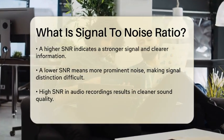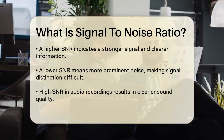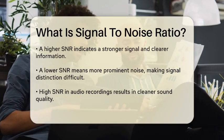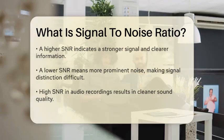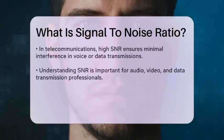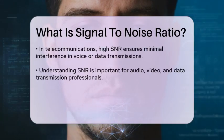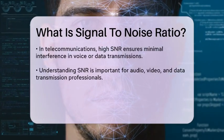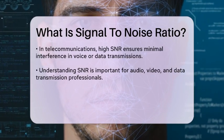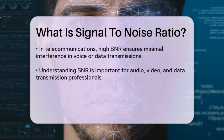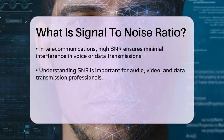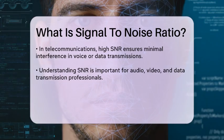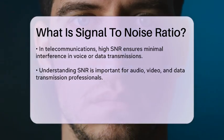Conversely, a lower signal-to-noise ratio means that the noise is more prominent, making it harder to distinguish the actual signal. In practical applications, such as in audio recordings, a high signal-to-noise ratio allows for a cleaner sound, while in telecommunications, it ensures that voice or data transmissions are received with minimal interference.